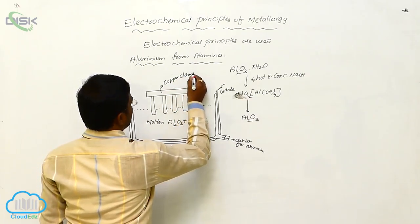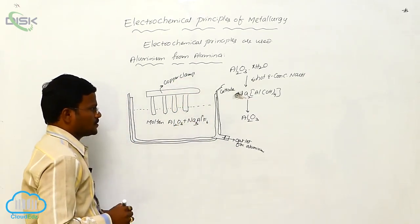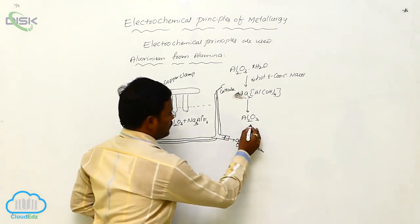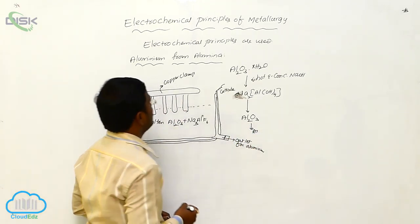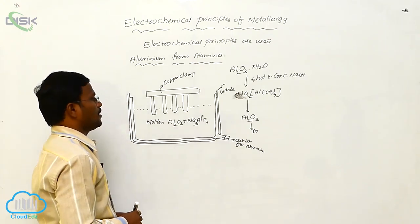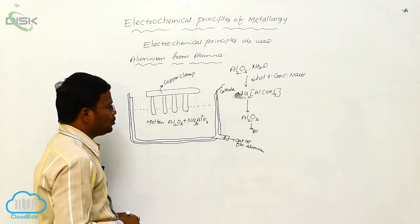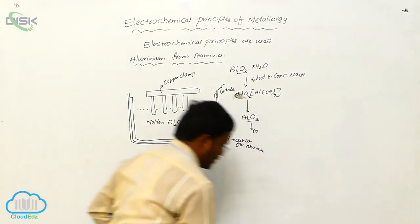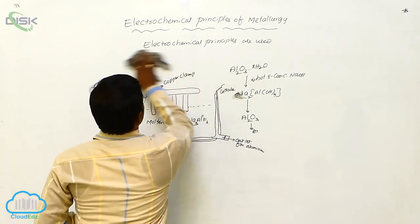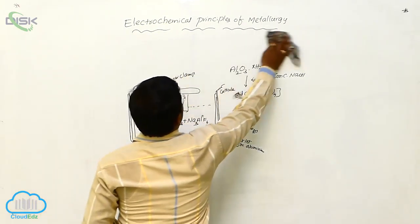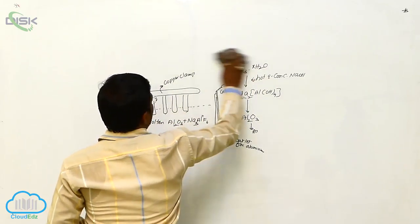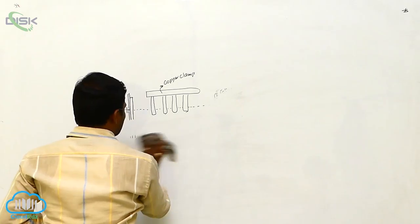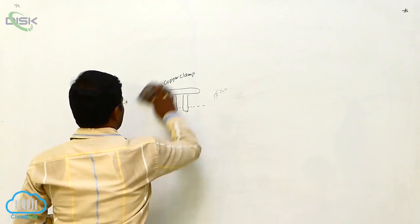It works as a cathode — a stainless steel cathode — and a copper clamp is present with graphite rods. This is the isolation or extraction of aluminum from bauxite, and this is the chemical reaction.